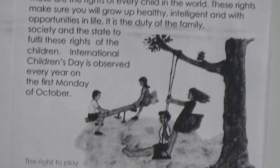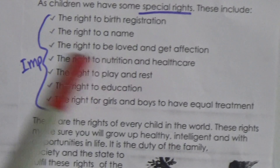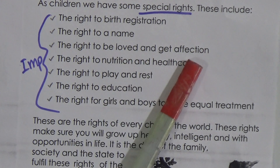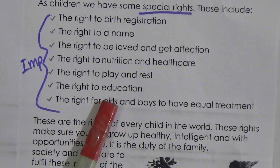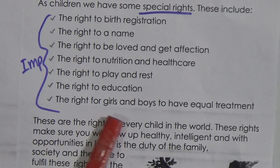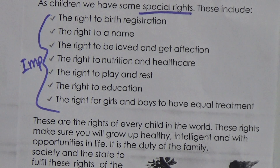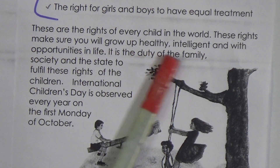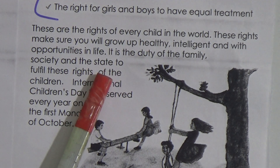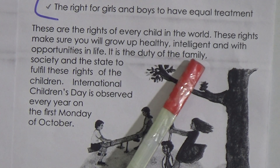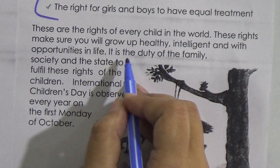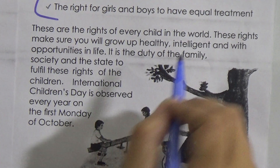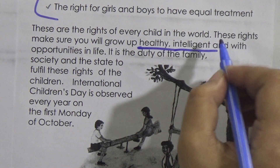These seven special rights are: the right to birth registration, the right to a name, the right to be loved and get affection, the right to nutrition and healthcare, the right to play and rest, the right to education, and the right for girls and boys to have equal treatment — meaning no gender discrimination; boys and girls will be treated equally. These rights make sure you will grow up healthy, intelligent, and with opportunities in life.